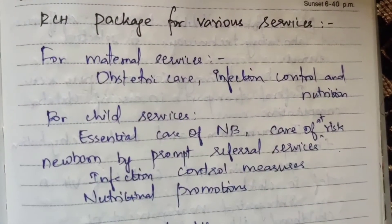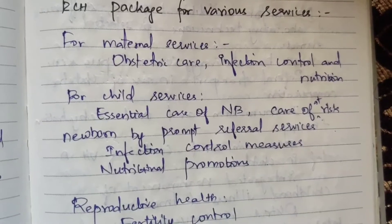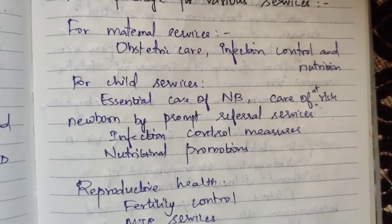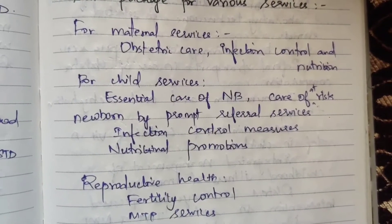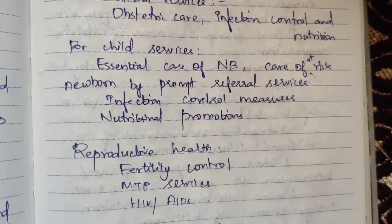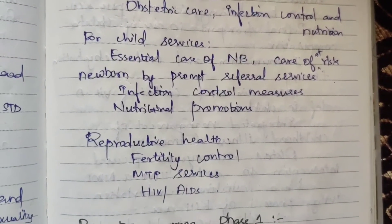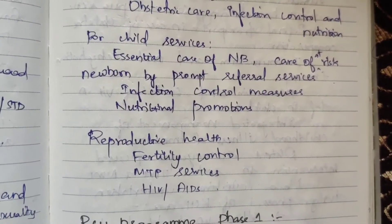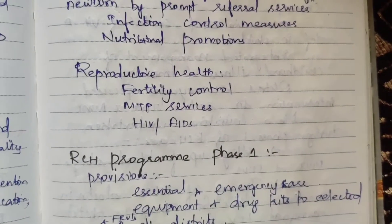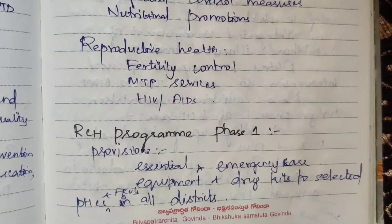The RCH package includes various services. For maternal services: maternal care, obstetric care, infection control, and nutrition — covering full antenatal, intra-natal, and post-natal care. For child services: essential care of newborns, care of at-risk newborns, prompt referral services, correct treatment, infection control measures, and nutritional promotion. For reproductive health: fertility control, and MTP (Medical Termination of Pregnancy) services for unwanted pregnancies.